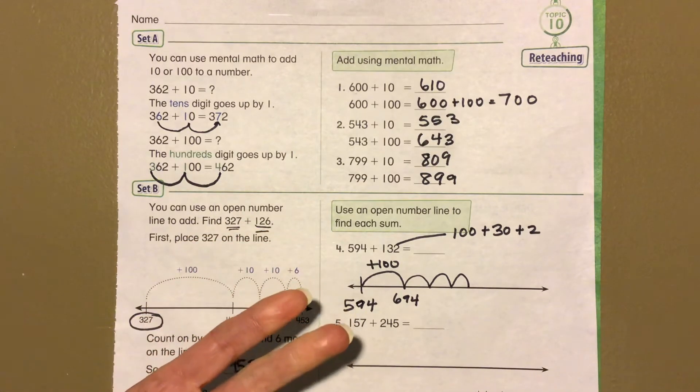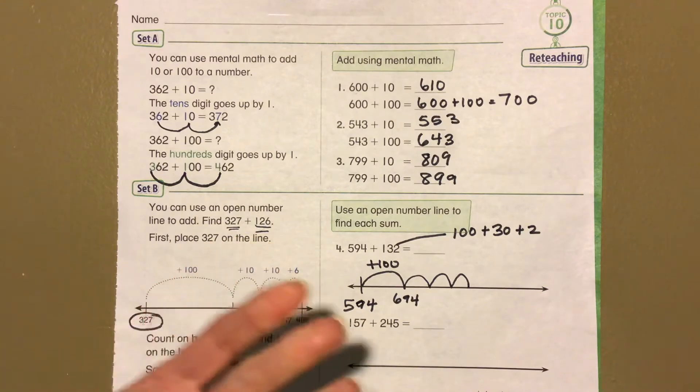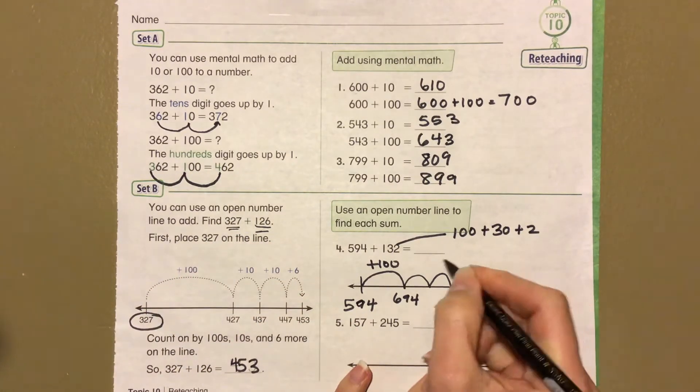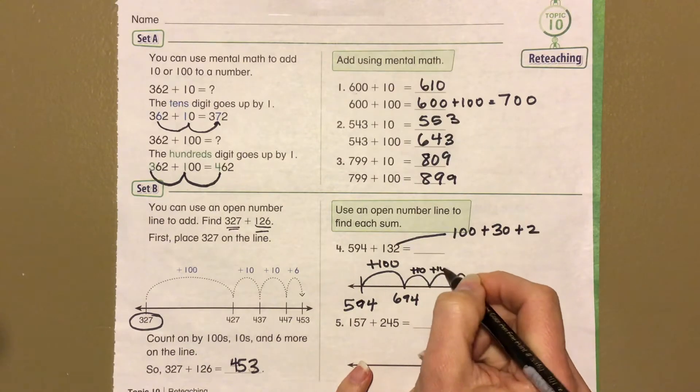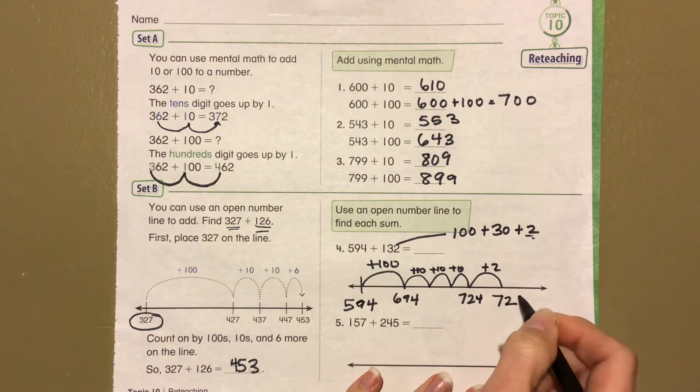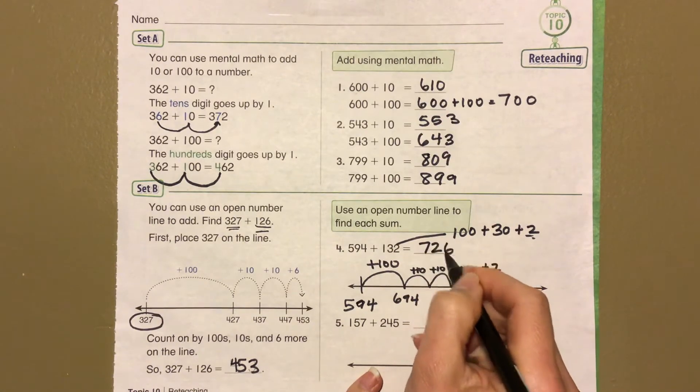So 694, 704, 714, 724. So 724, plus 10, plus 10, plus 10. Then we need to do two more, plus 2 gets us to 726. So 726.